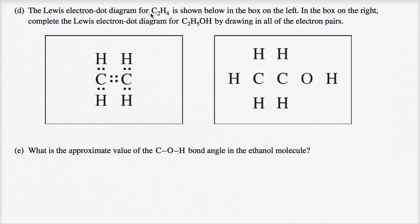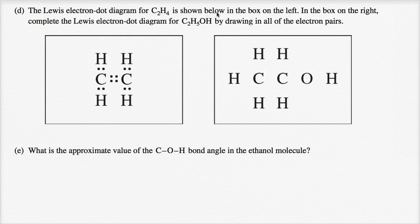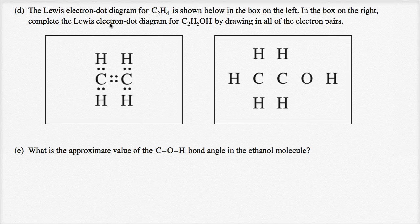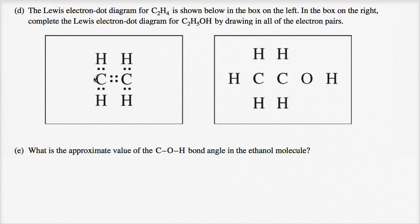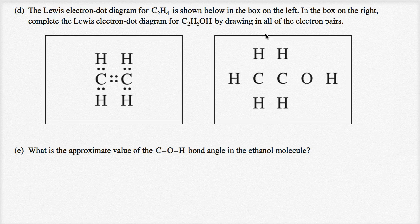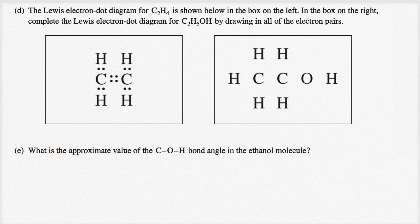The Lewis electron dot diagram for C2H4 is shown below in the box on the left. In the box on the right, complete the Lewis electron dot diagram for C2H5OH, or ethanol, by drawing in all of the electron pairs. And what we could do, I'll do it in a way where we can see which electron comes from which atom.